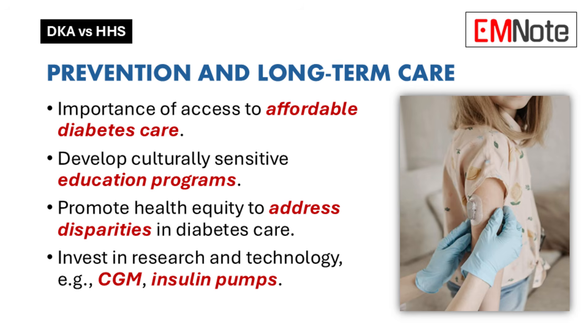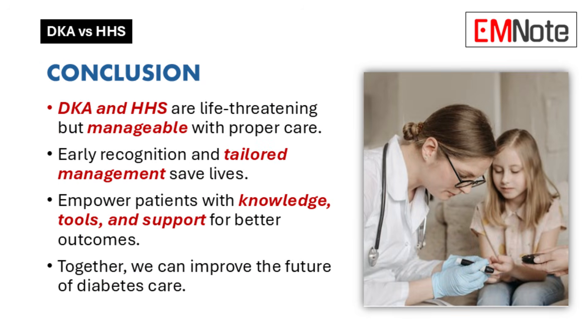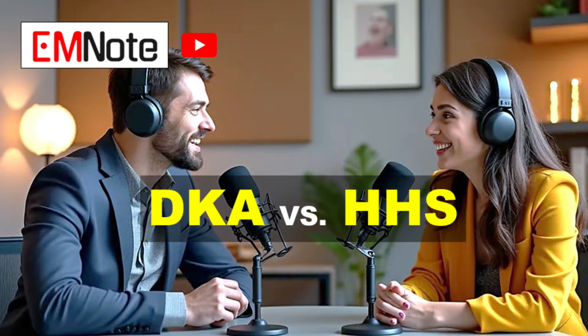Research is also a big piece of this puzzle — we need to keep investing in new treatments, better prevention strategies, and new technologies. We're already seeing amazing advancements: continuous glucose monitoring, insulin pumps, and even closed-loop systems that automatically adjust insulin based on glucose levels. It's important to remember that diabetes is serious, but it's not a life sentence. With the right management, education, and support, people with diabetes can live long, healthy lives. Knowledge is power, and when we work together we can really make a difference.